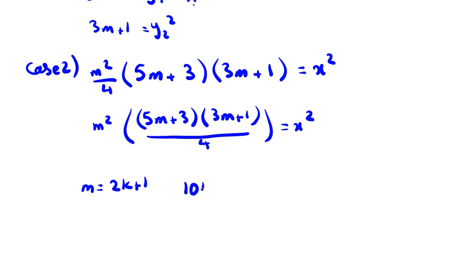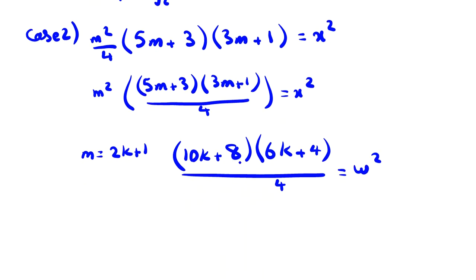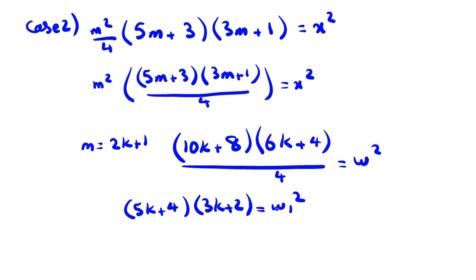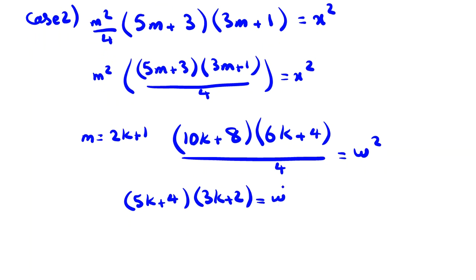The first one is 10k+5+3 = 10k+8, and 6k+3+1 = 6k+4, over 4 equals w². And then we divide by 2: it will be (5k+4)(3k+2) equals w².